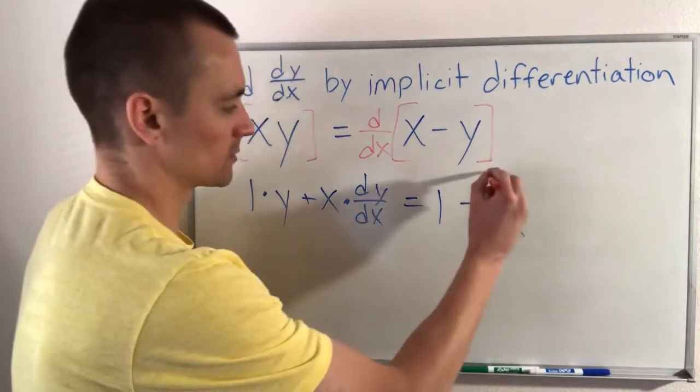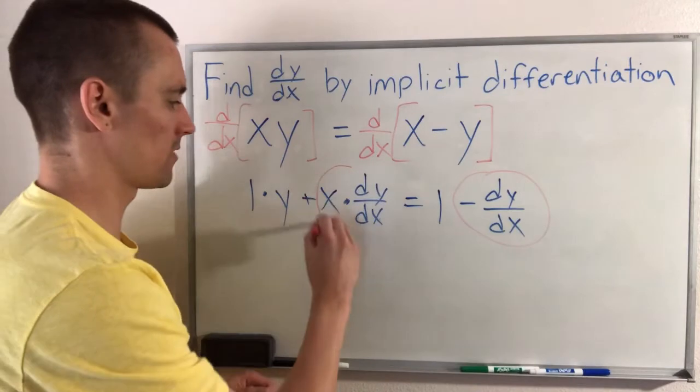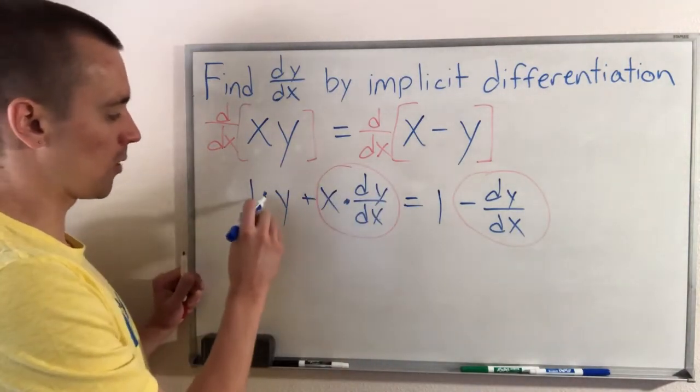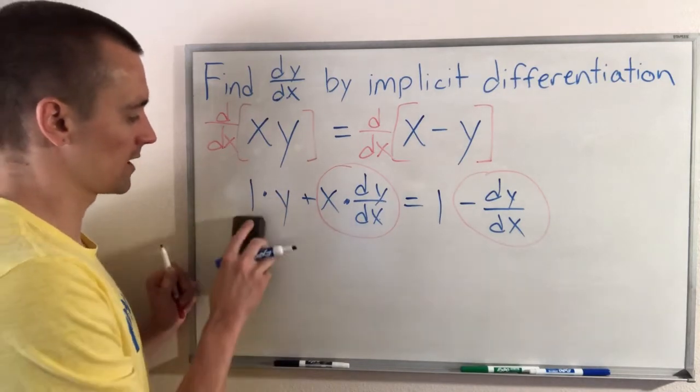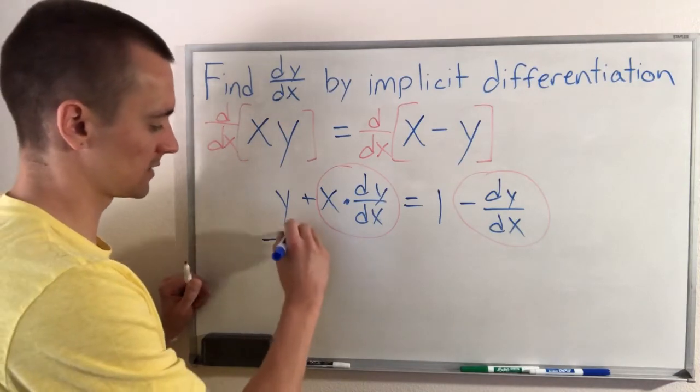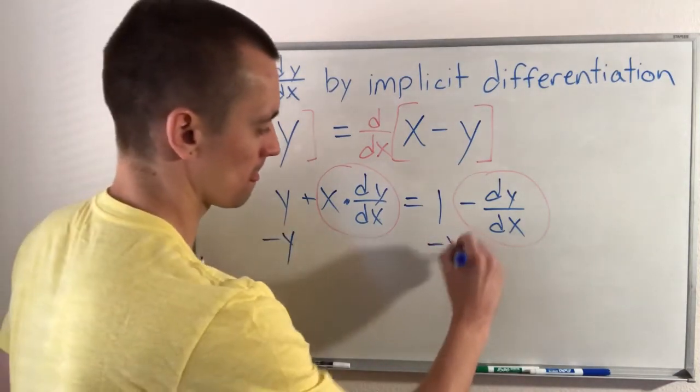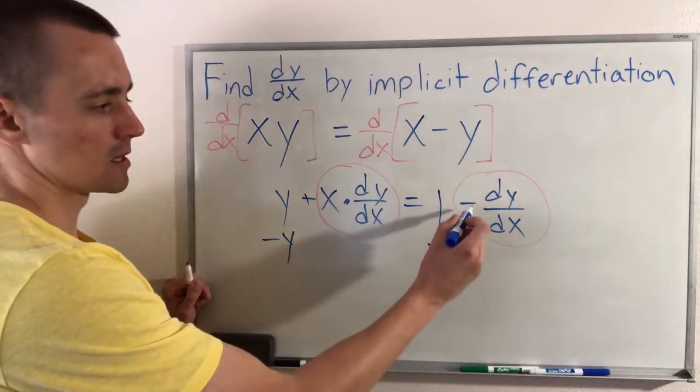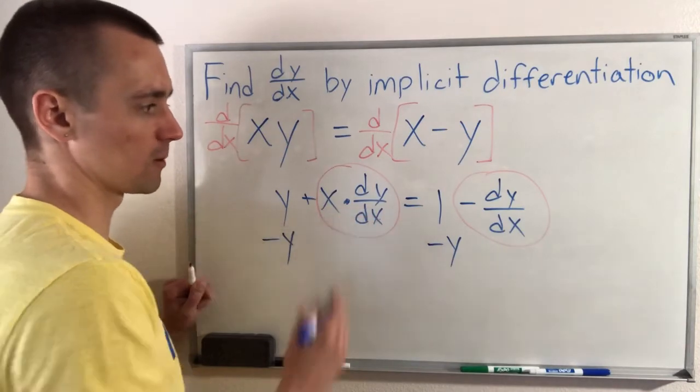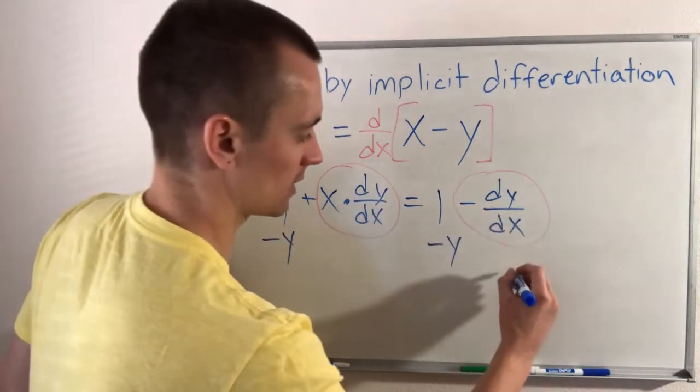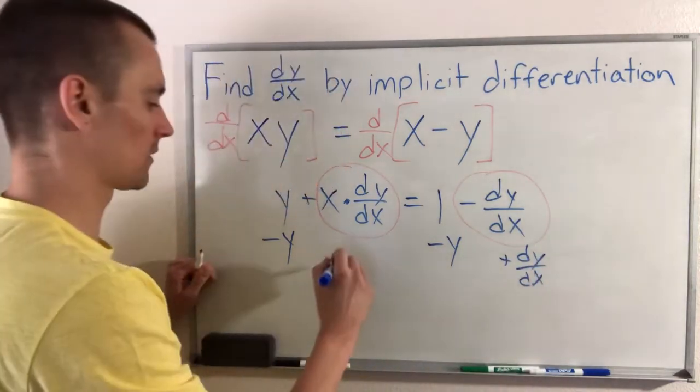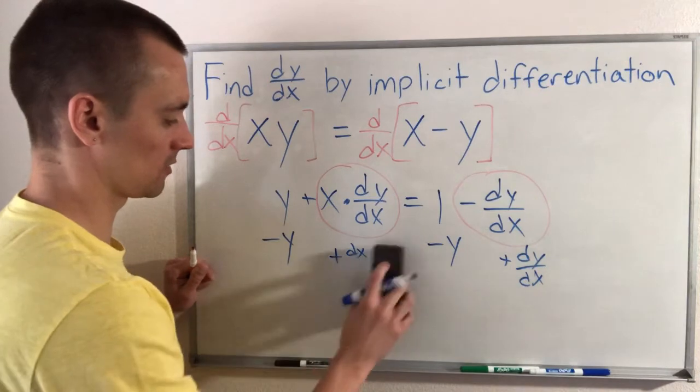You can see our terms with dy/dx in them are there and there. So this term here, this is just y. 1 times y is just y. So y doesn't have a dy/dx in it. So we're going to subtract this over to the other side of our equation. And then this dy/dx we want to move over to this side with our other dy/dx term. So since we have minus dy/dx over here, we can add dy/dx to both sides to get it over here.